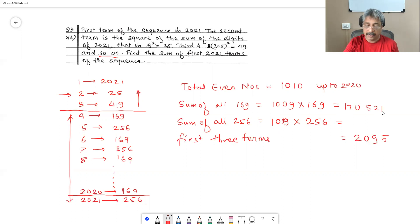So 256 into 1009 is equal to 258,304 and therefore summation, find the sum of first 2021 numbers in this sequence is 170,251 plus 258,304 plus the first three terms 2095. It is 430,920.